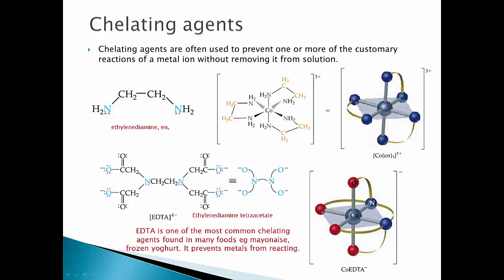Chelating agents are often used to prevent reactions with metal ions — blocking a metal ion. Ethylenediamine and EDTA (ethylenediamine tetraacetate) are the two common ones. EDTA is used in mayonnaise and frozen yogurts to prevent metals from reacting. Ethylenediamine is bidentate, so when it binds it takes 2 spots; three EN ligands can fit around a metal that accepts 6 spots in an octahedral geometry.